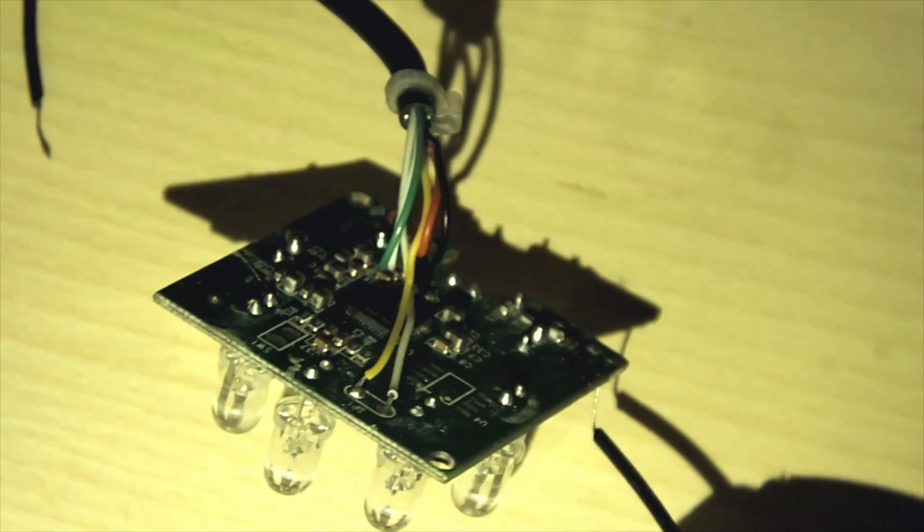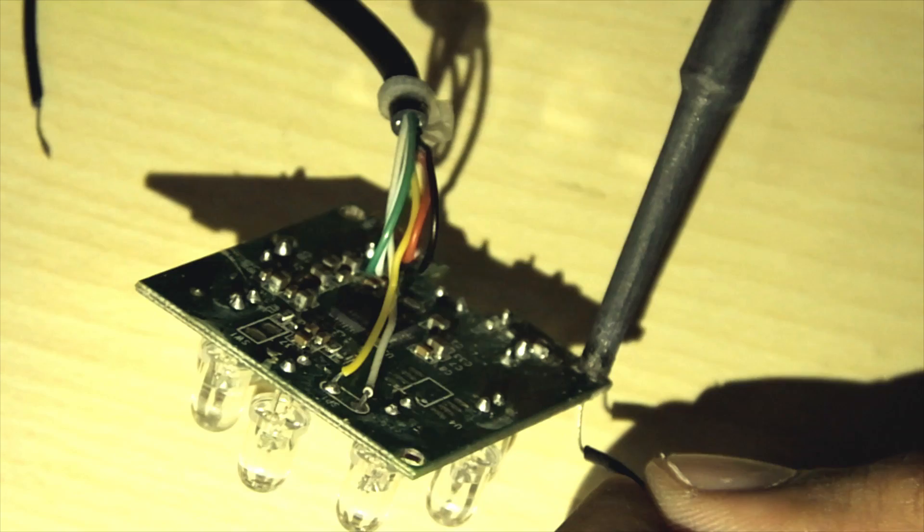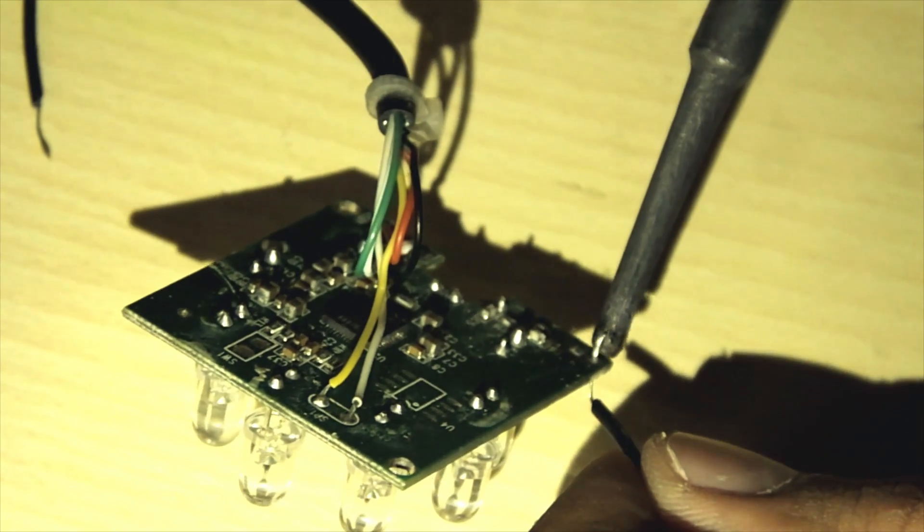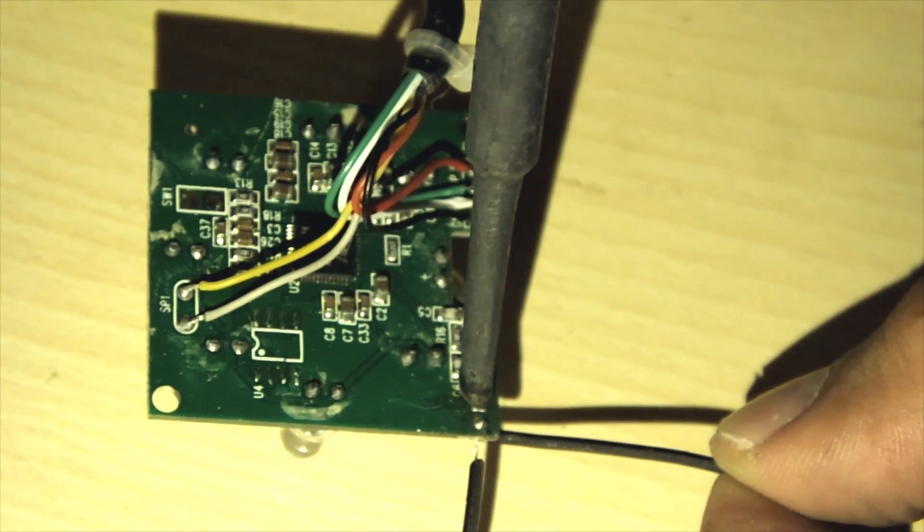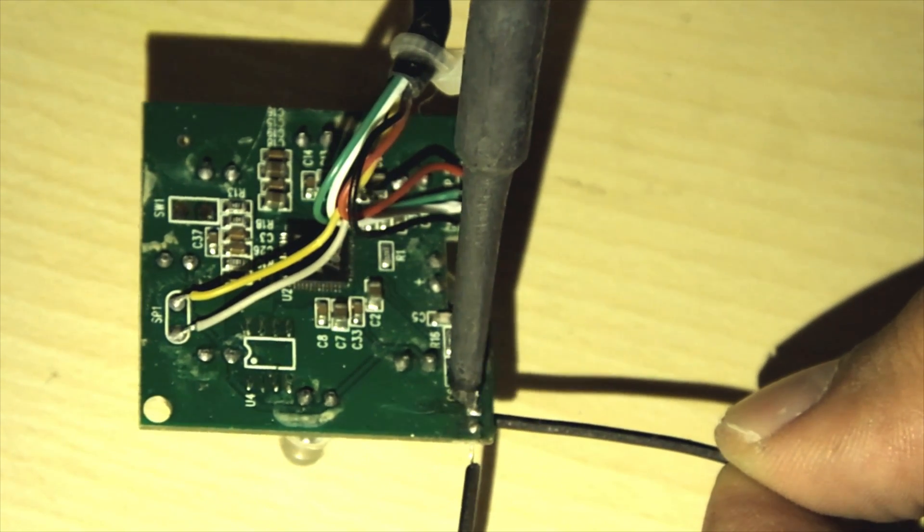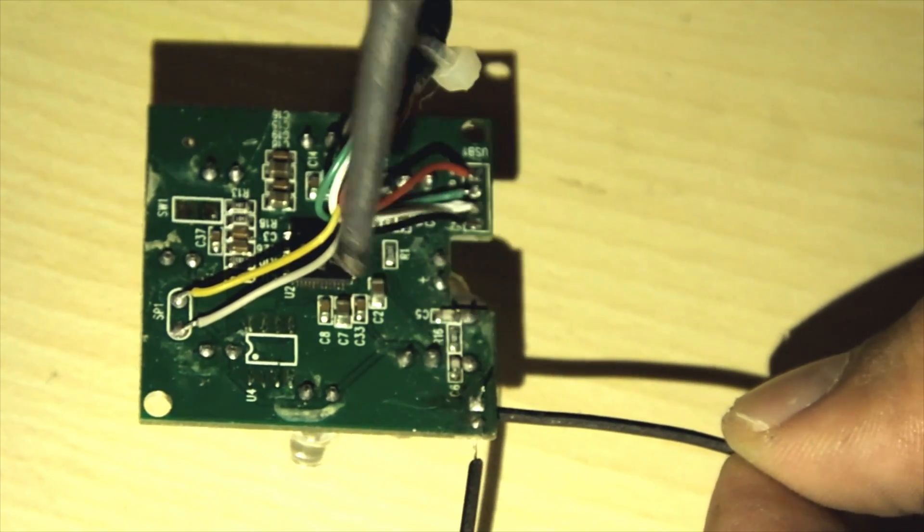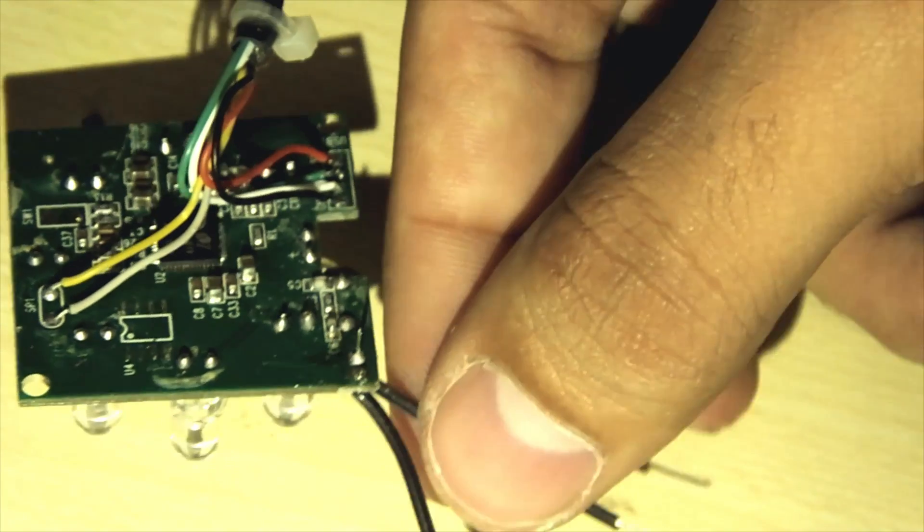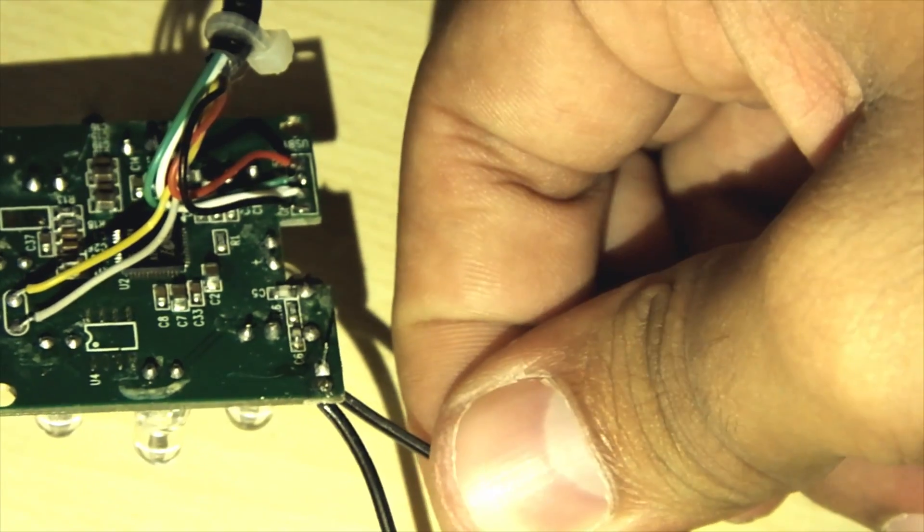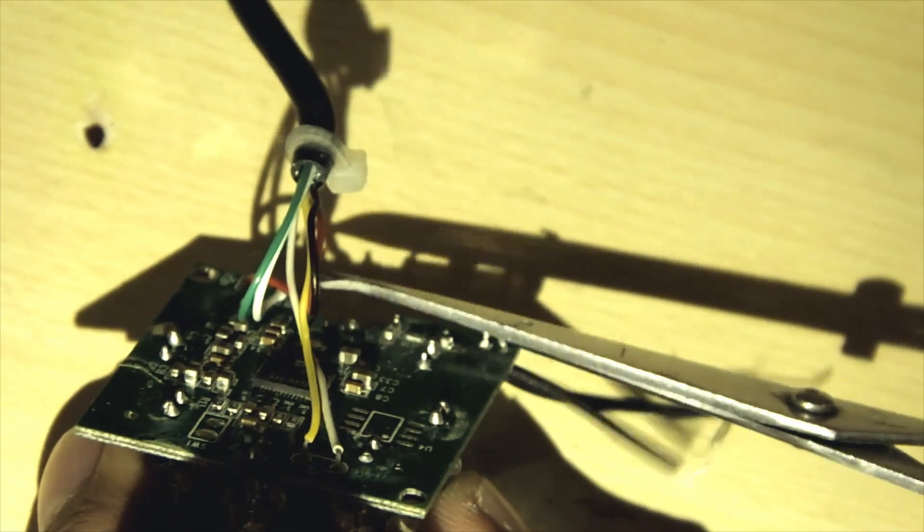Strip two thin wires and connect them to the mic pins. Solder them in place. Push the insulation as far up into the board as possible to avoid a short circuit. Snip off the excess ends of the wire.